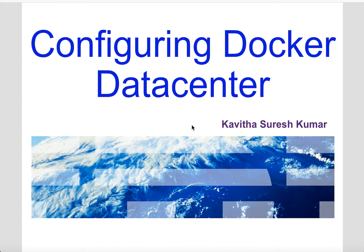Hi, this is Kavitha Suresh Kumar and I'm going to demonstrate how to configure Docker Data Center in a production environment. For this demo I'm going to use ten virtual machines with Ubuntu 14.04 installed, with the latest version of commercially supported Docker engine. I'm going to configure three machines as UCP controller nodes, the remaining seven as UCP nodes, and configure three systems as the DTR.